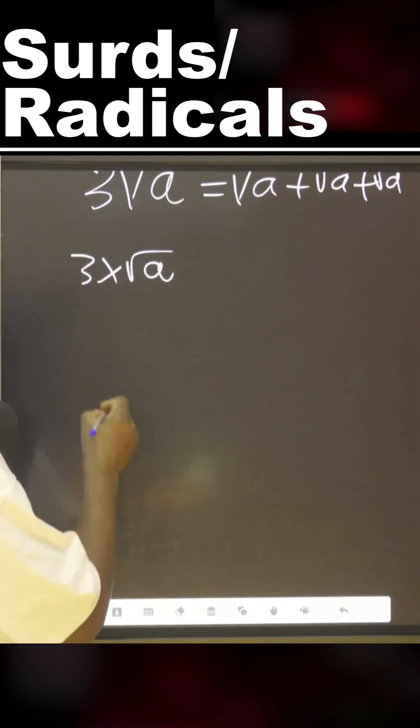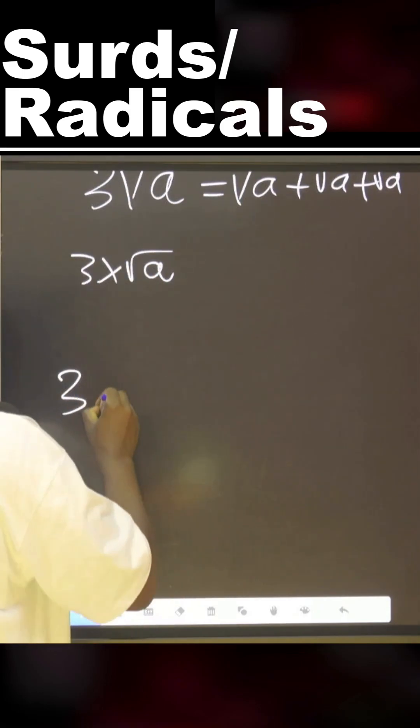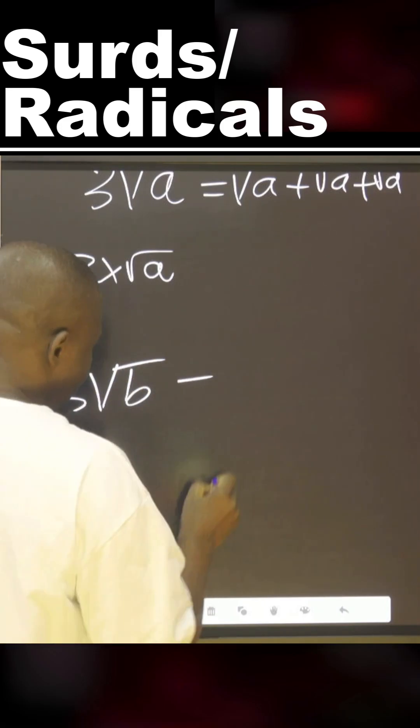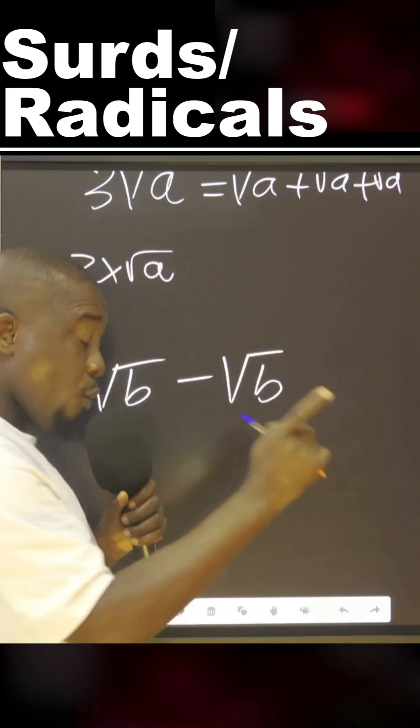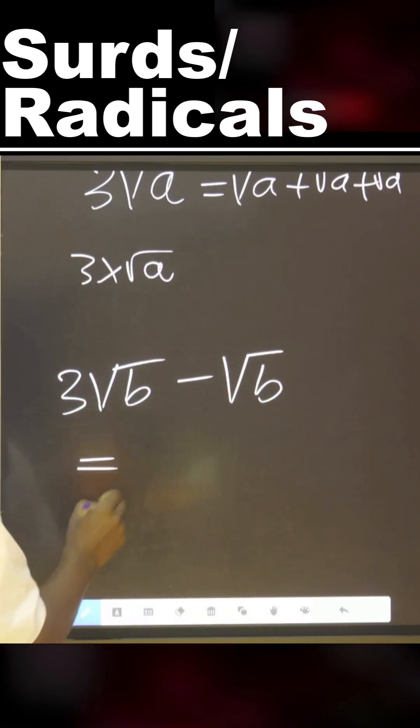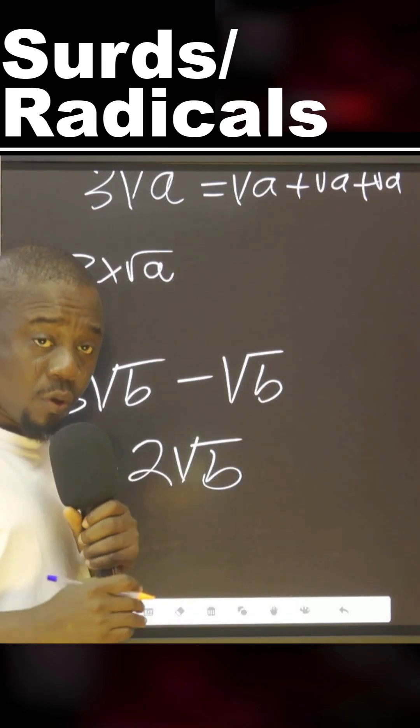Now, if you are doing three square root of B minus square root of B, how many square root of B here? Three. Here? One. It means therefore this is two times this.